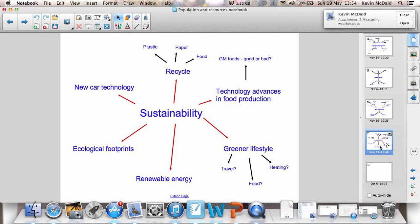So sustainability and the sustainable use of resources. We can recycle things like new car technology, so hybrid cars, electric cars, use of renewable energy, being aware of what our ecological footprints are. Our lifestyle can change as well, the way we travel, the food we eat, the way we heat our homes. We have to think about all these things to try and make a change.